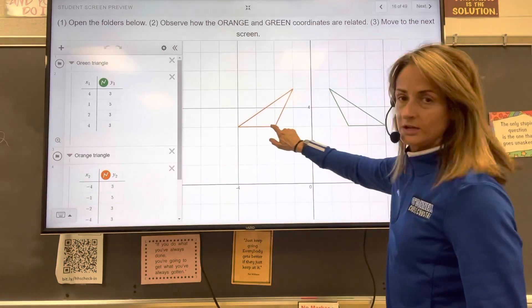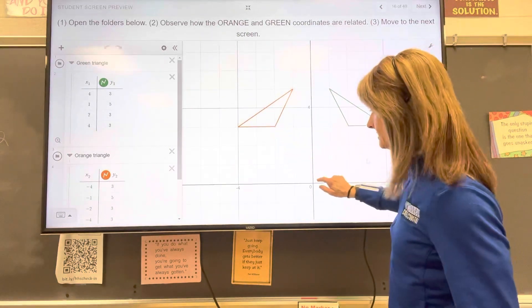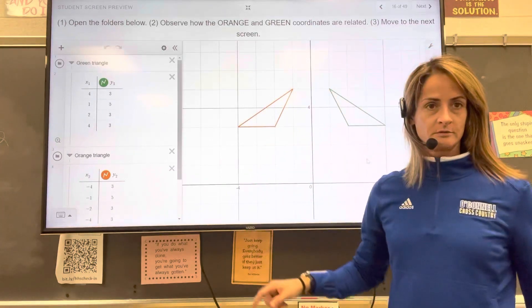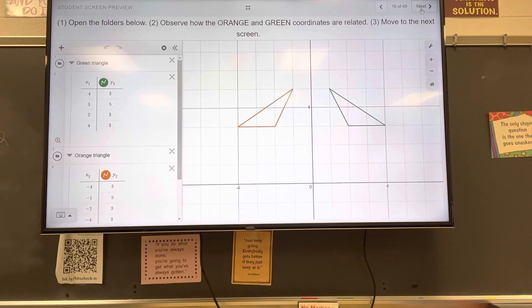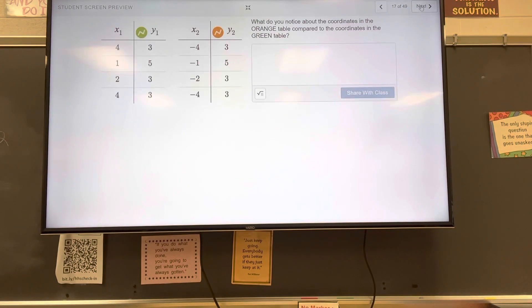So this point is at 2, 3. And this point over here on the orange triangle is at negative 2, 3. How are we doing? Good? All right. So that is a reflection over the y-axis.